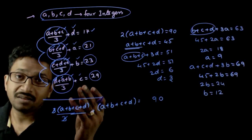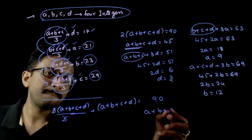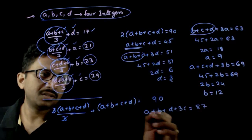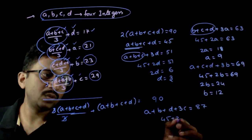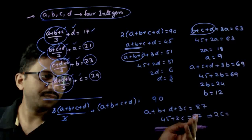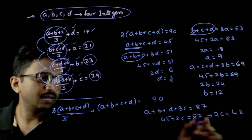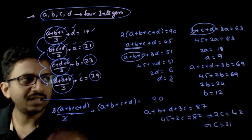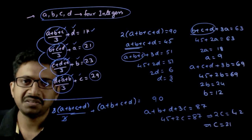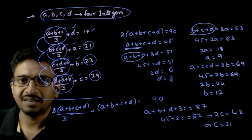And finally, using the last expression: a + b + d + 3c = 3 × 29 = 87. So 45 + 2c = 87, which implies 2c = 42, and therefore c = 21. So these are the four values: a = 9, b = 12, c = 21, d = 3. In the question you are asked to find one of the values of a, b, c, and d — you can select one of these options. Thank you.